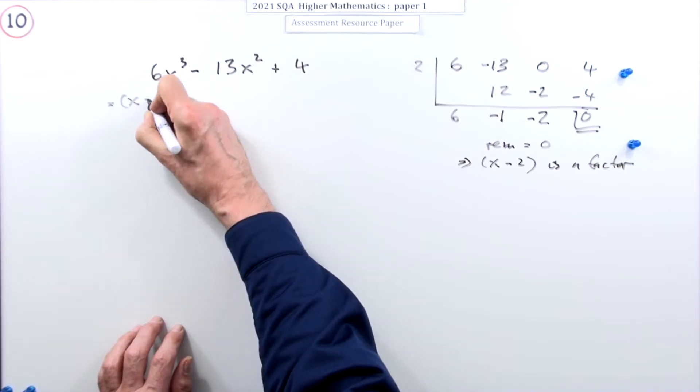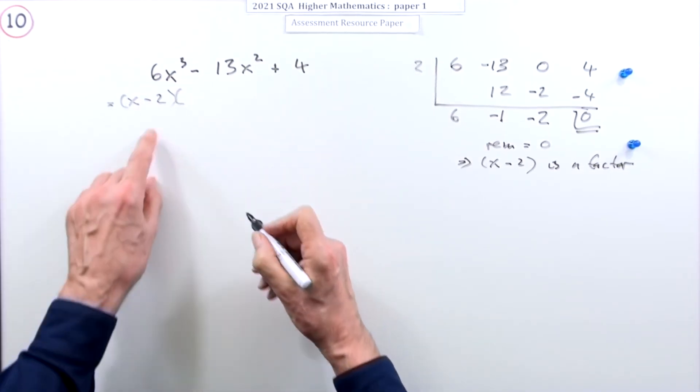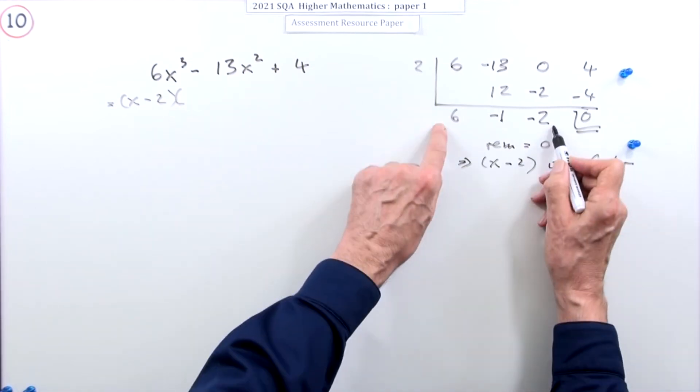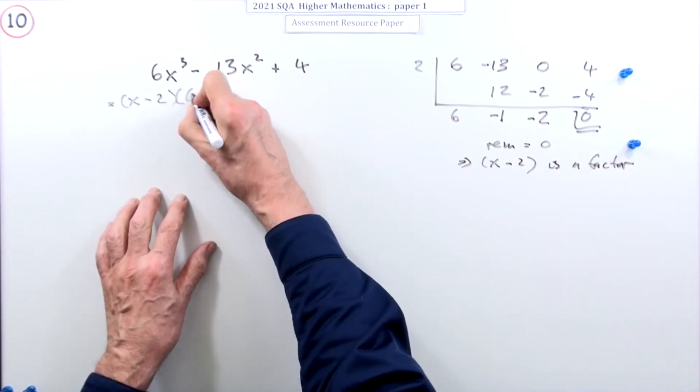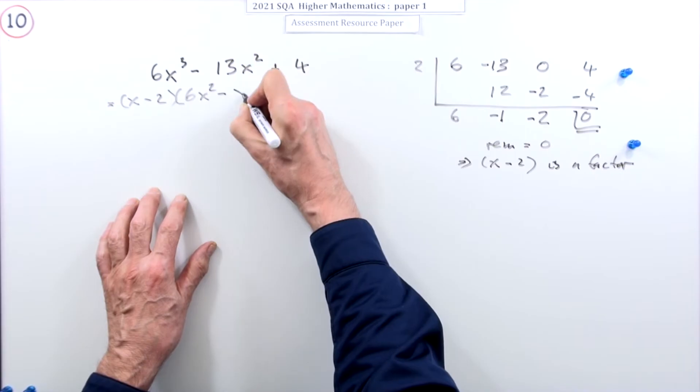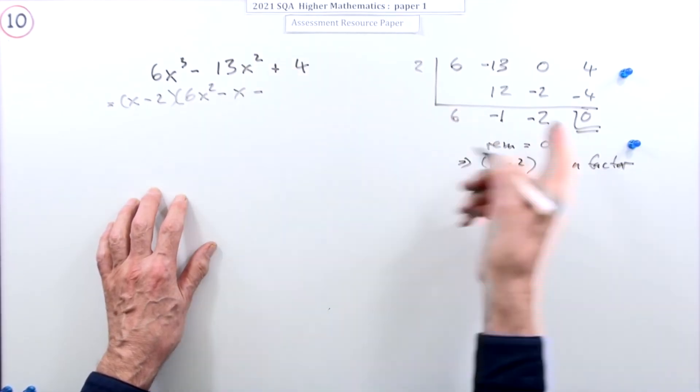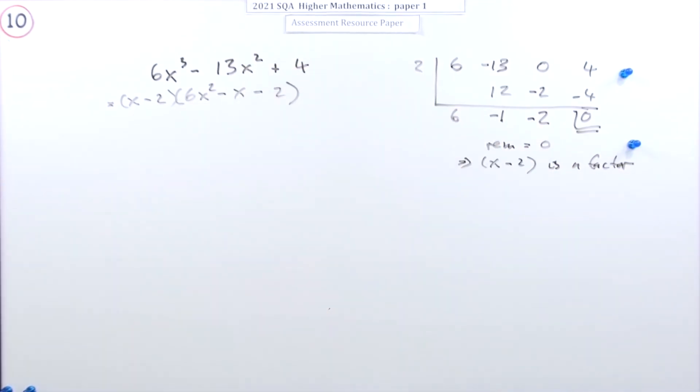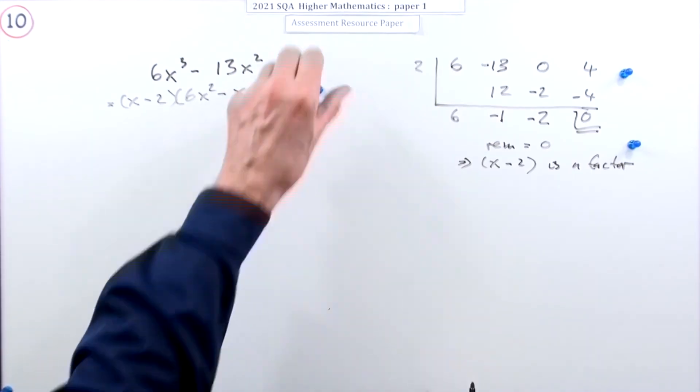So now we can pop over here. So I know the linear factor is x minus two, and I know that the remaining quadratic factor is this one: 6x² minus one lot of x minus two.